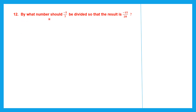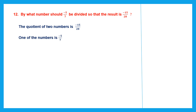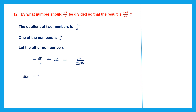Question 12. By what number should minus 5 by 7 be divided so that the result or the quotient is minus 15 by 28? The quotient of two numbers is minus 15 by 28. One number is minus 5 by 7, and we have to find the other number. According to the question, minus 5 by 7 is divided by x so that our result is minus 15 by 28. When it is division we are going to work out the left hand side first.